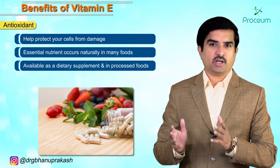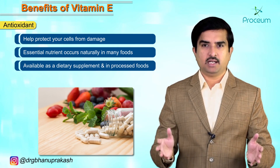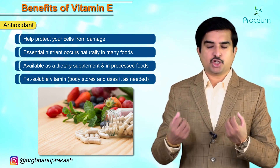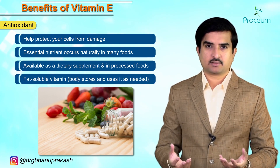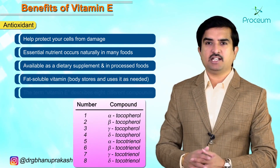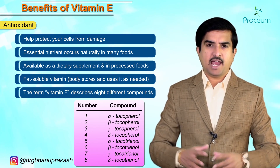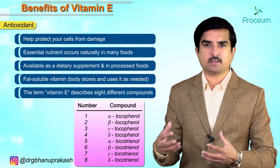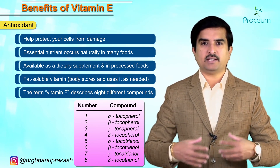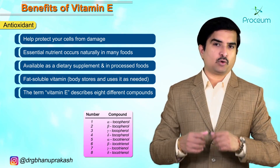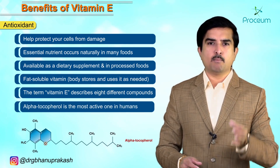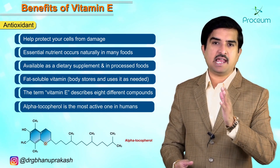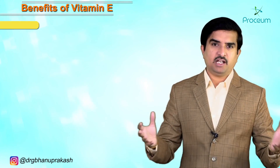Like vitamin A, vitamin D, and vitamin K, vitamin E is also a fat-soluble vitamin, which means our body stores it and uses it whenever needed. The term vitamin E describes eight types of compounds — eight different types — but out of all of them, alpha-tocopherol is the most active and biologically active form in humans.